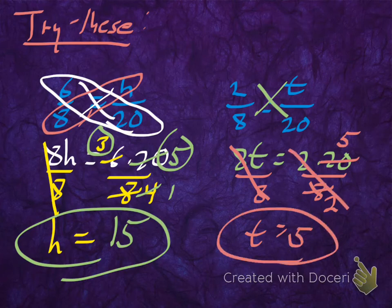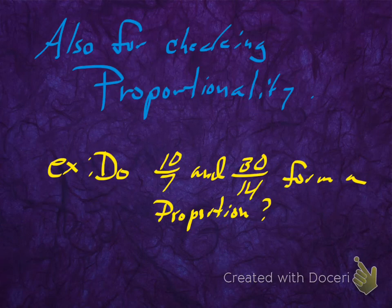And sure enough, 2 over 8 is equal to 5 over 20, and again, that makes sense because both of those reduced to 1 fourth. So hopefully you got 15 and 5. If you did, you're well on your way to solving proportions with cross-multiply.